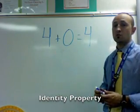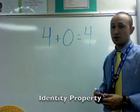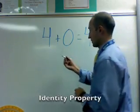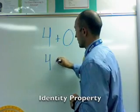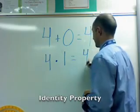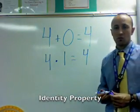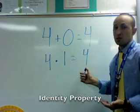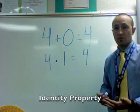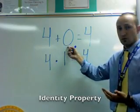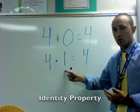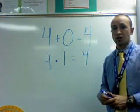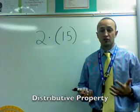We can also use multiplication for the identity property, by multiplying a number times one. For example, four times one remains four — whenever you multiply a number by one, it's unchanged. So what you need to remember for the identity property: it's either adding zero to a number because it won't change, or multiplying the number by one because it won't change. The identity property is a property where the original number doesn't change.